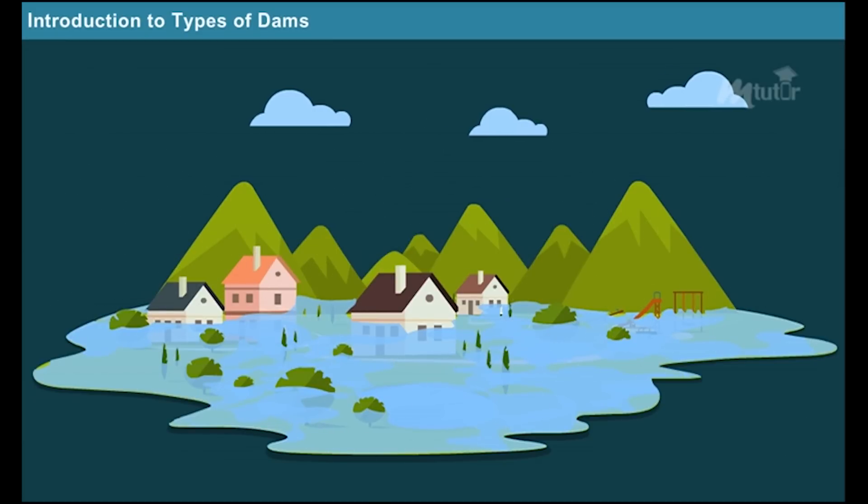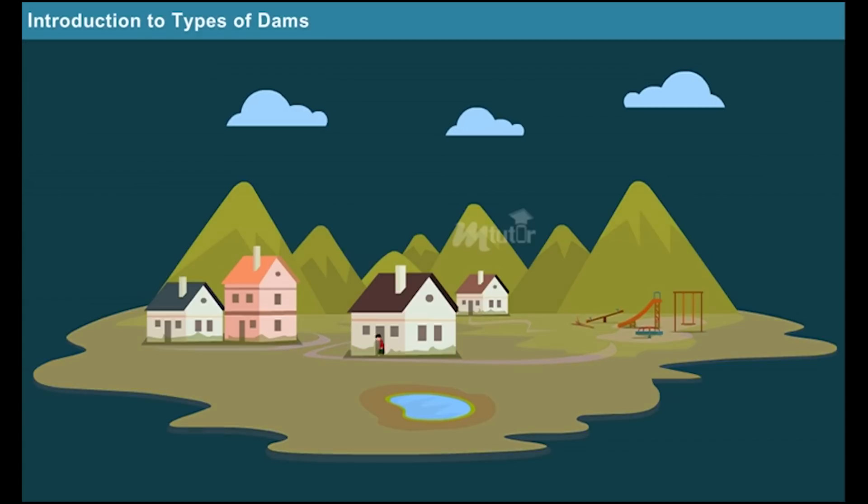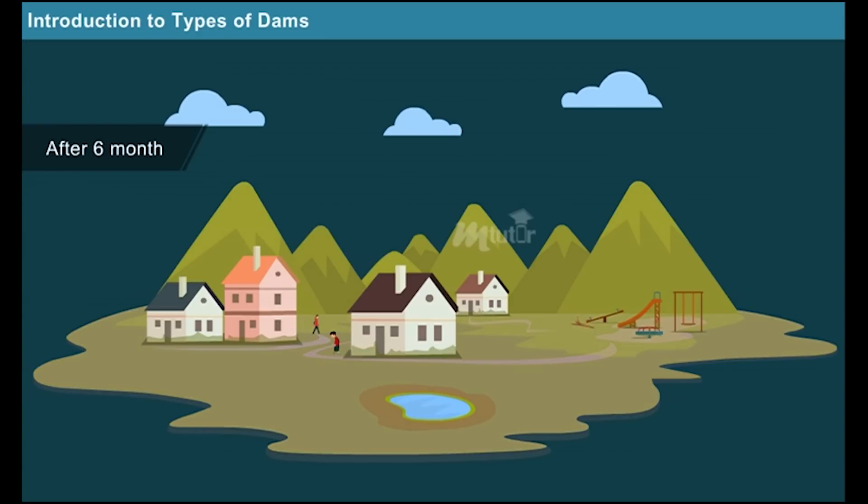After a few days, the rainwater drained out slowly and people returned to their normal life. Six months after the flood, people of Badlapur encountered severe water scarcity. Very little water was left in the ponds and lakes.